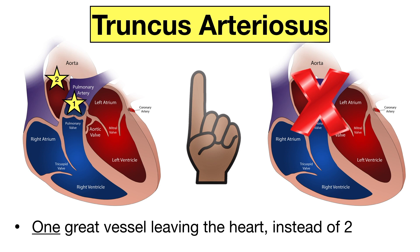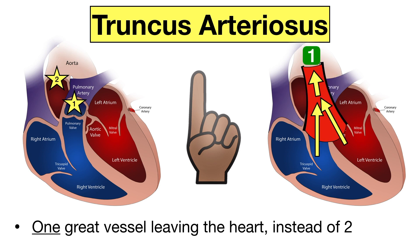However, in truncus arteriosus, the great vessel coming out of the heart fails to divide during development, leaving a connection between the aorta and pulmonary artery. As a result, there is a ventricular septal defect — a hole between the right and left ventricles — and one great vessel leaves both the right and left ventricle. Both oxygen-rich and oxygen-poor blood is delivered to the body, which can lead to cyanosis. You can use the number one to remember truncus arteriosus and one great vessel leaving the heart.